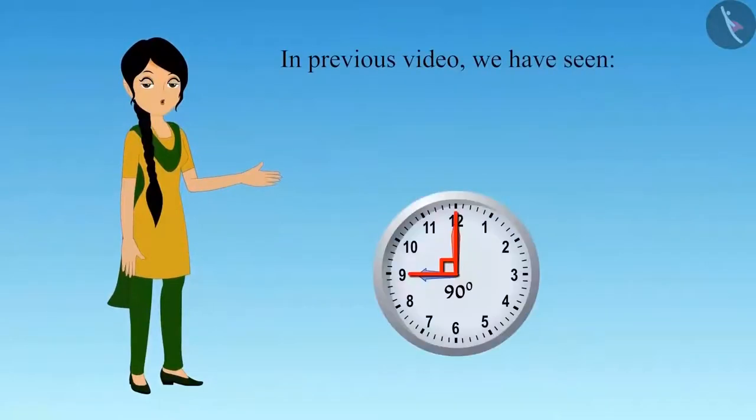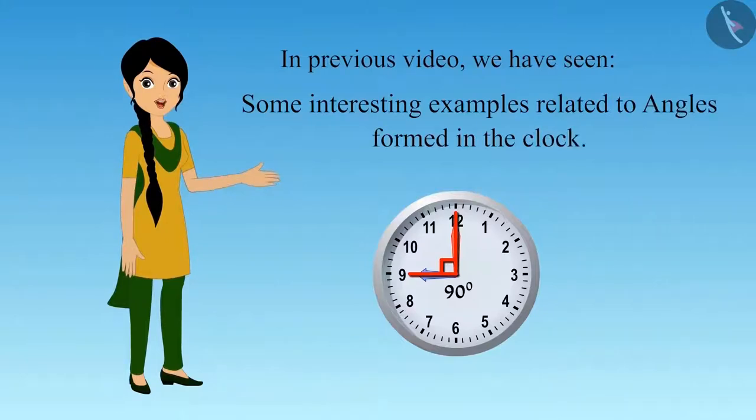Hello friends. In the previous video, we have seen how the angles of 90 and 0 degrees are formed in the clock with the help of some interesting examples.